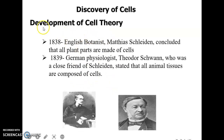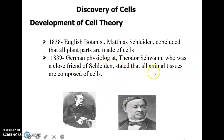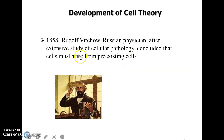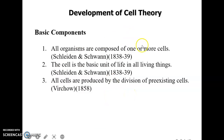In 1838, English botanist Schleiden concluded that all parts of plants are made up of cells. In 1839, German physiologist Schwann, who was a close friend of Schleiden, stated that all animal tissues are also made up of cells. In 1858, Virchow, after extensive study of cellular pathology, concluded that cells must arise from pre-existing cells.